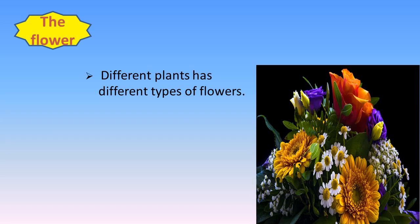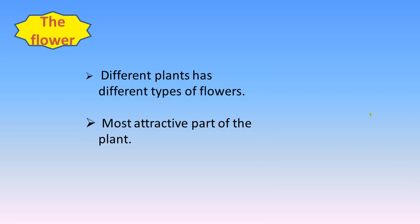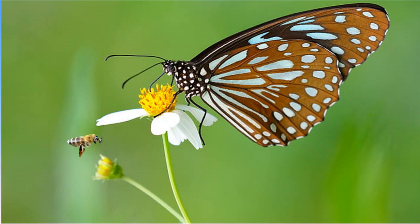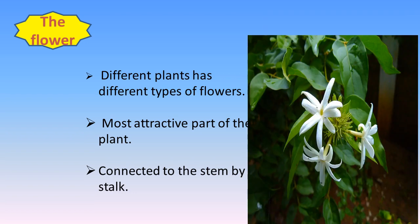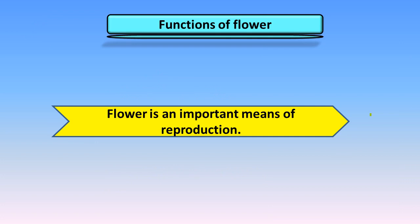Flowers. Different plants have different types of flowers. It is the most attractive part of the plant and they have a specific smell. Many flowers produce a sweet-smelling liquid called nectar, which attracts insects. The flower is connected to the stem by a stalk. This is a hibiscus flower and here is its stalk — the stalk of hibiscus is long while the stalk of jasmine is short. The most important function of flowers is reproduction.